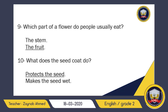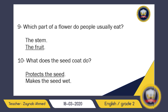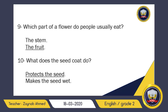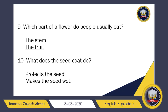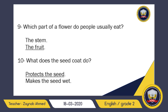Number nine: which part of a flower do people usually eat? Can you eat the stem? Maybe in some instances, but people usually eat fruit. Fruit is the part of a flower which people usually eat.